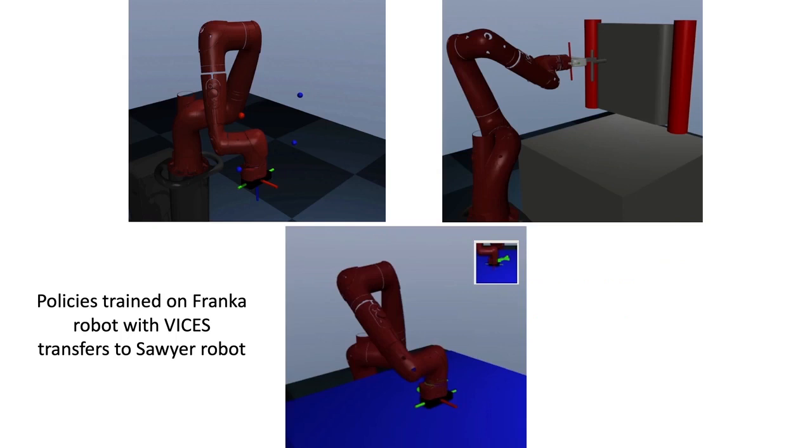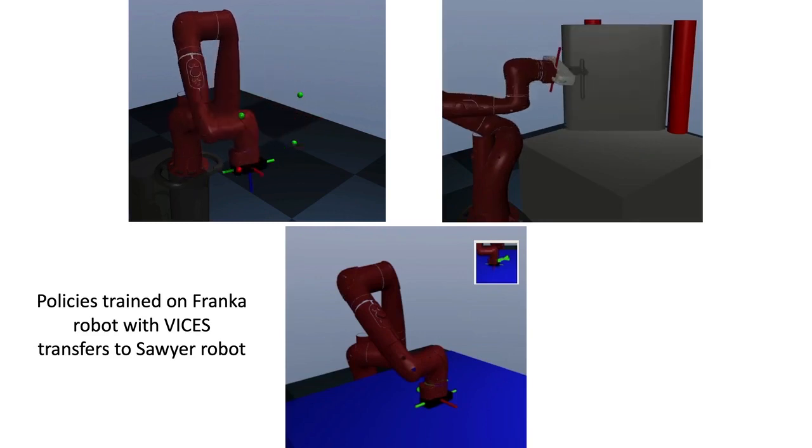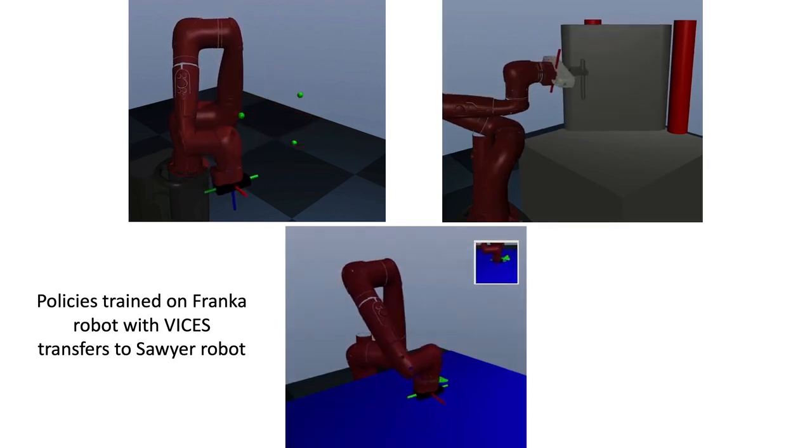We also evaluate how policies trained on one robot embodiment transfer to a new one. VICES allows us to transfer from the Franka robot to the Sawyer robot without any fine-tuning, thanks to the abstraction of the dynamics and morphology of the robot.